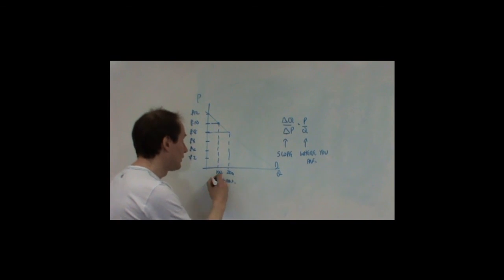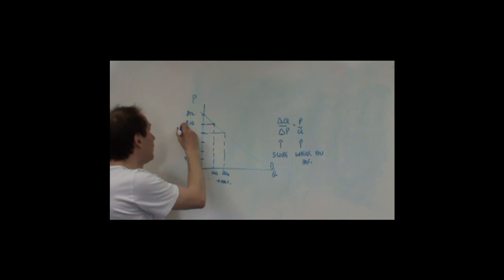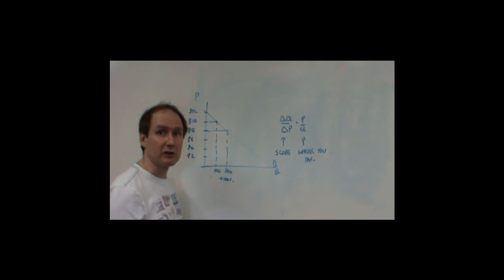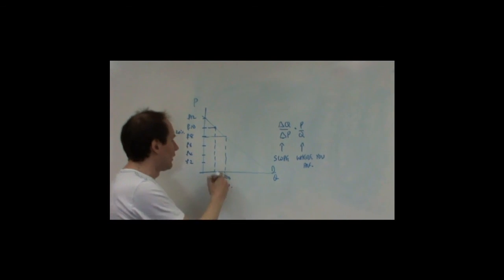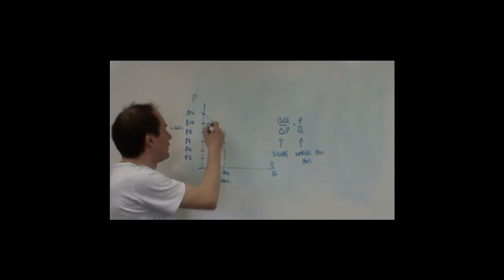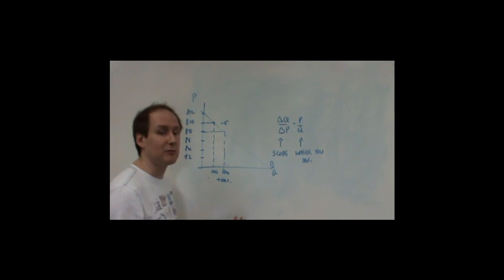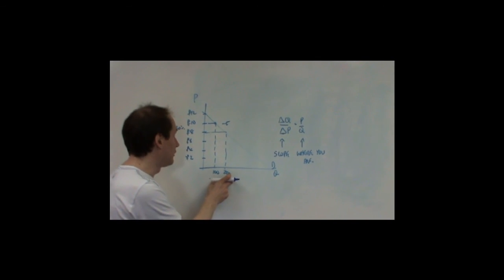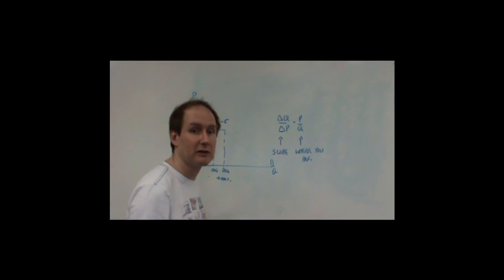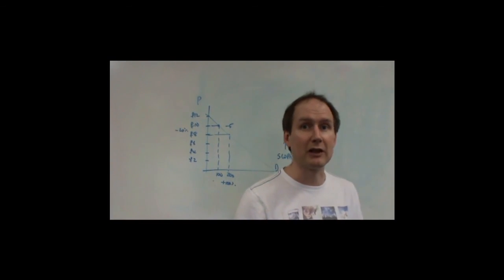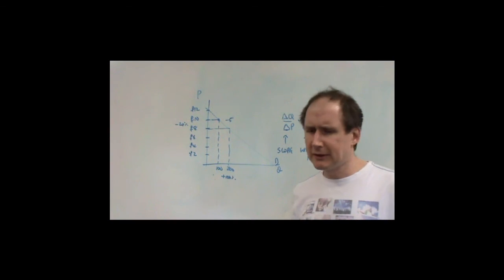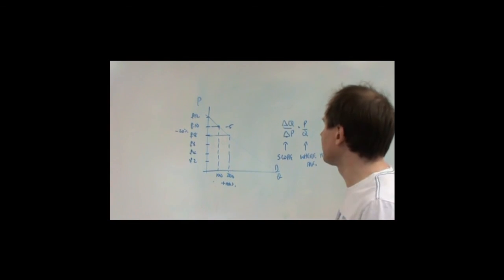That's a 100% change in demand for a 20% cut in price. So, at that, between those two points for the decrease in price, what we can see is that price elasticity of demand is minus 5. The change in demand is 100%, change in price is 20%. Therefore, we're getting a more than proportional change. But, what about down at the bottom?